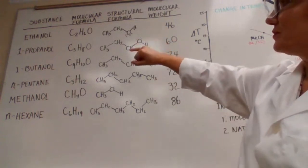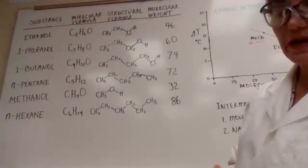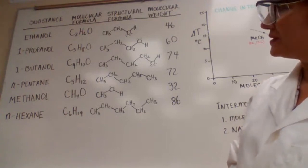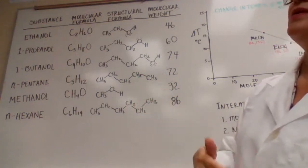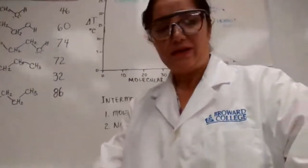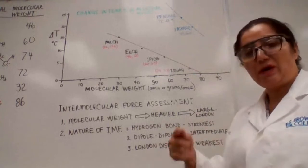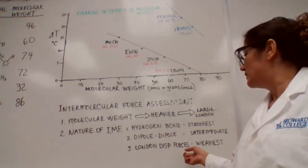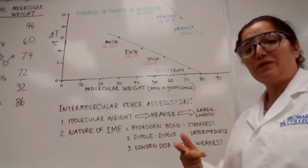Ethanol, propanol, butanol, and methanol all have hydrogen bonding, so they will have stronger intermolecular forces compared to pentane and hexane, meaning they will evaporate at a slower rate. The second factor is molar mass, which affects London dispersion — the higher the molar mass, the stronger the London dispersion forces. So the two factors are: type of intermolecular force and molar mass of the substance.